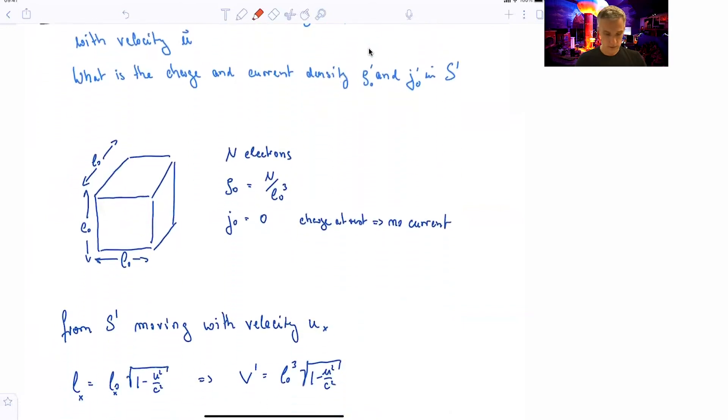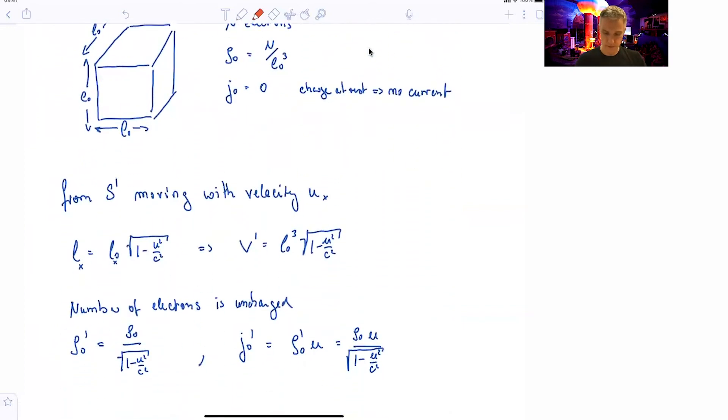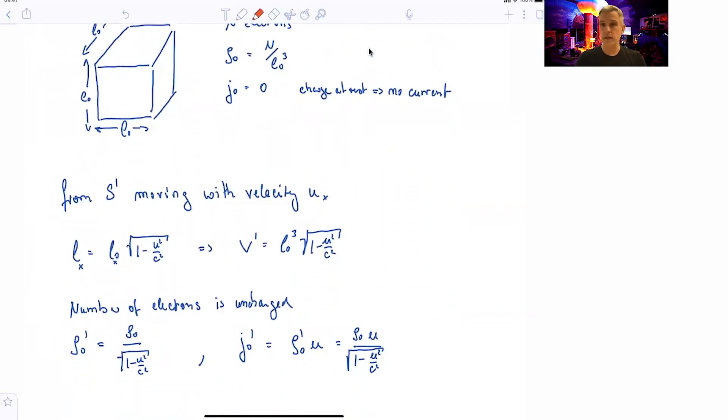All right, this was rather straightforward. But now in our moving reference frame, the situation changes. Here, one of the directions, the direction in which we are moving, is Lorentz-contracted. So we have Lx equal to L0 divided by gamma or times square root 1 minus u squared over c squared. The volume then of the same cube in the s prime reference frame is L0 cubed divided by gamma.